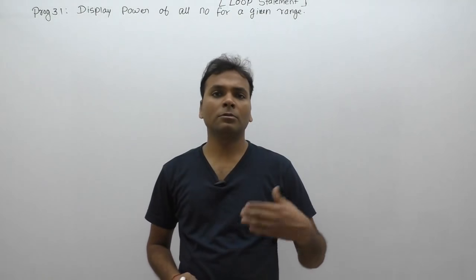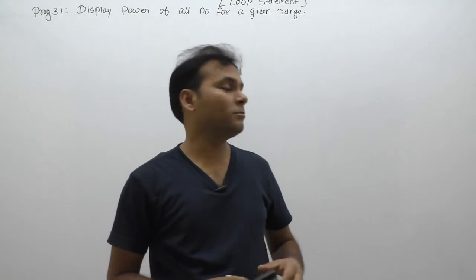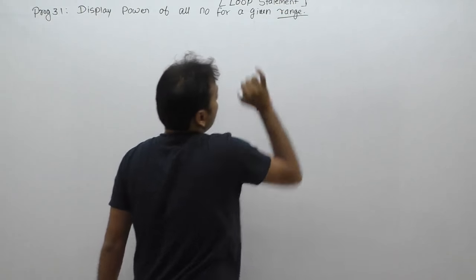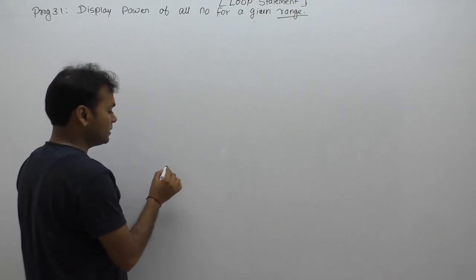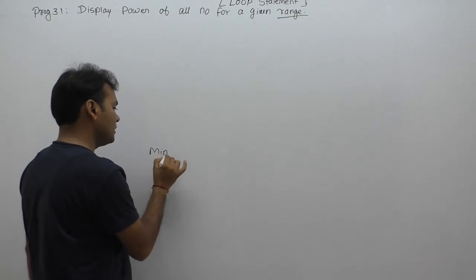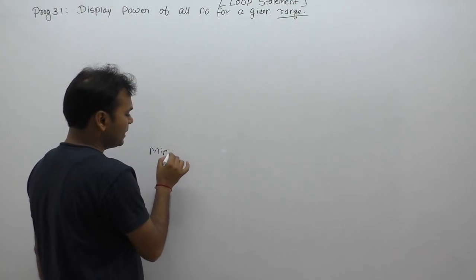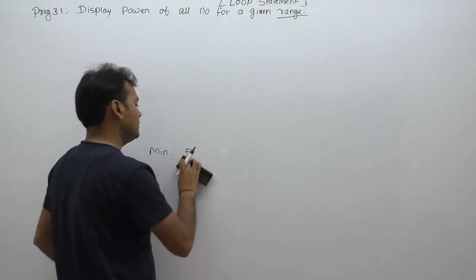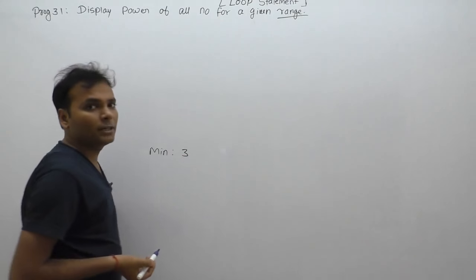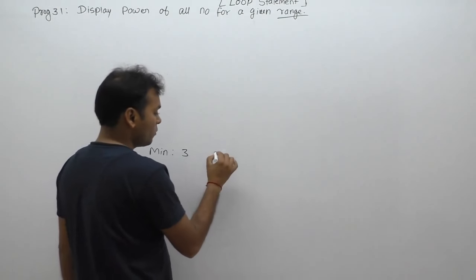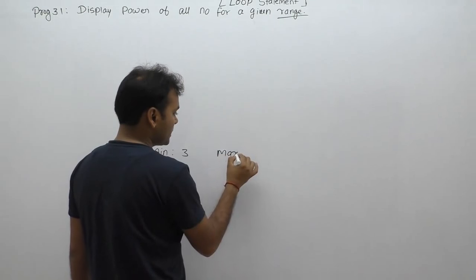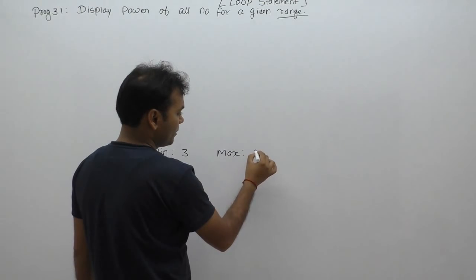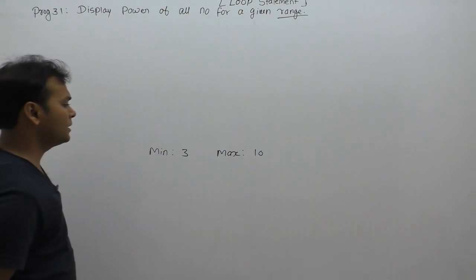Let's discuss a program to display the power of all numbers for a given range. First, we discuss what is meant by this program. Range means we are entering a minimum range and a maximum range — any positive numbers. All operations are performed with respect to positive numbers. For example, minimum is 3 and maximum is 10.